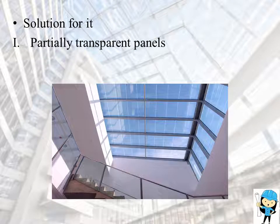There are two solutions for the above-mentioned problem. The first solution is partially transparent panels. A German company developed it, which absorbs 60% of the sunlight they receive, and the 40% of light is transmitted through the panel so that it can be used for the roof toppings of any building. Average light visibility will be maintained as 40% of light is transmitted.